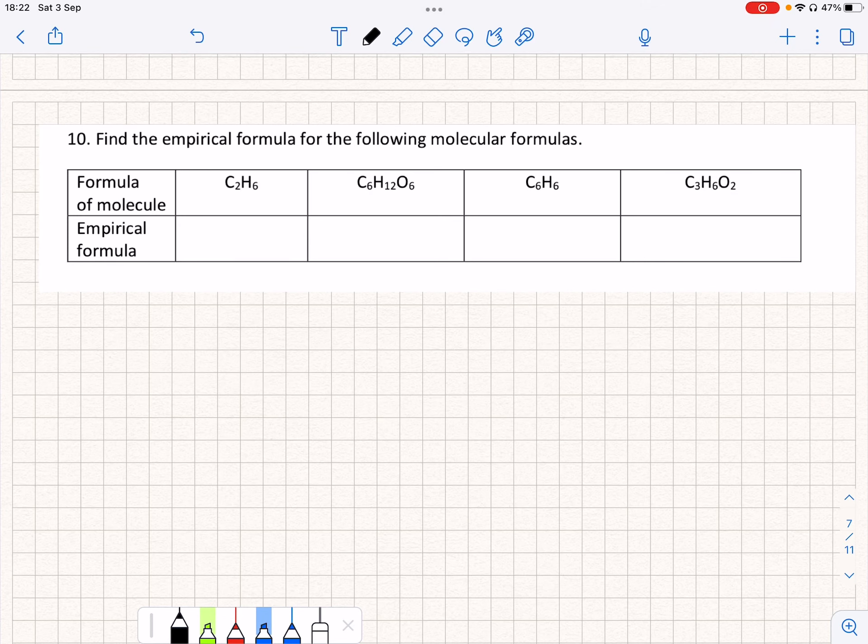Okay, in these questions here, we've been asked to find the empirical formula. Remember the definition: an empirical formula is the simplest ratio of the number and type of atoms.